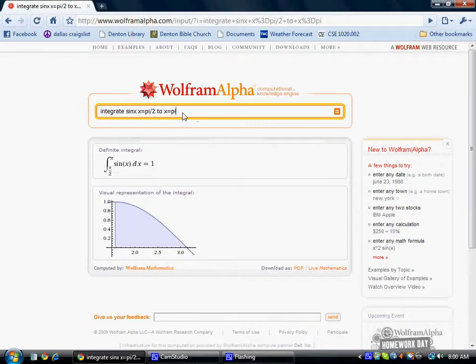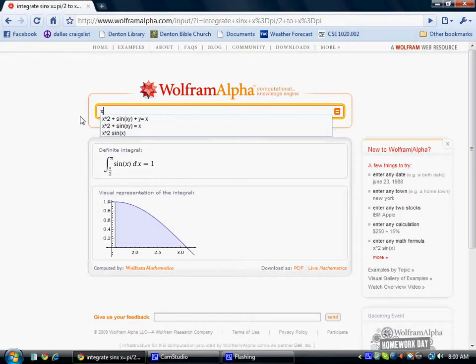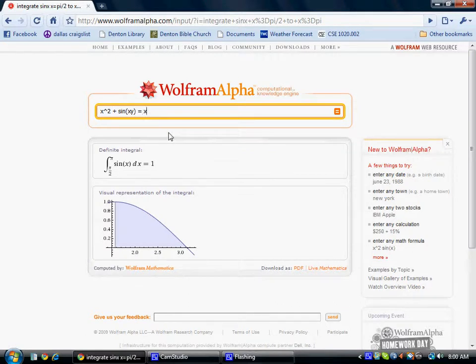Now, what's really interesting about WolframAlpha, which I haven't found anywhere else online, is if you take something like x squared plus sine xy equals x. Obviously, I can't solve for y here. So how am I going to graph it? I can't graph this on my graphing calculator. I have to have it as a function, f of x. Many online graphers are the same way. Enter a function f of x.